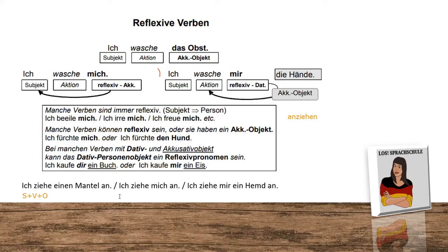Another way to say it: 'Ich ziehe mich an' — I'm getting dressed. Here we have the reflection, which is Akkusativ. But we cannot say 'Ich ziehe mich ein Hemd an.' We have to use the reflexive Dativ — 'mir' — meaning I am putting on myself a shirt.